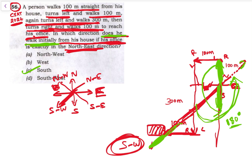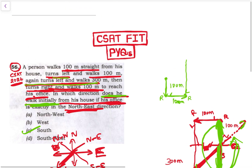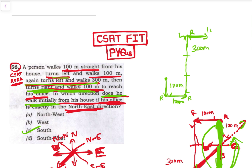Let's verify by starting from south. Starting from this point moving southwards, he walks 100 meters. From southwards, left is this side and right is this side. After 100 meters he turns left and walks 100 meters, then turns left again and walks 300 meters — 1, 2, 3. Now he is in this direction. Then turns right and walks 100 meters to reach the office.